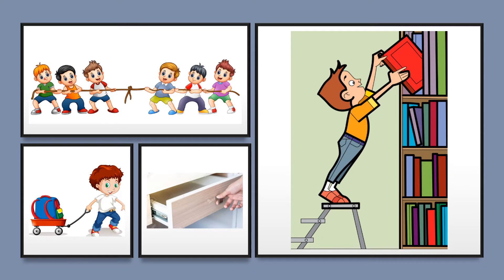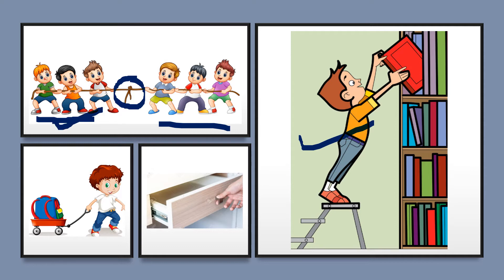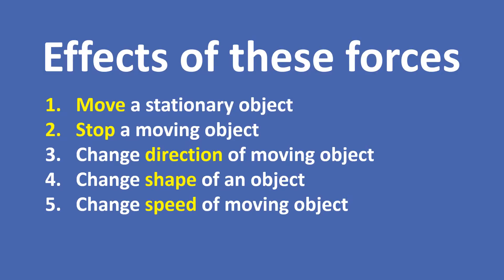When we pull an object it moves towards us — these are examples of pull force. This kid is pulling the book and the book moves towards him. Here, kids are playing tug of war; whichever team pulls the rope harder wins. Here, the kid is pulling a cart. Similarly, when we pull a dryer it comes out. Pull force is when we pull an object and it moves towards us.